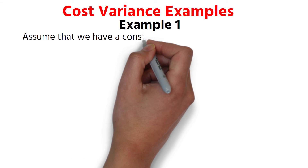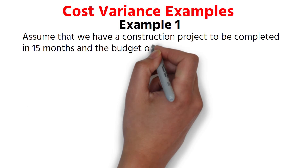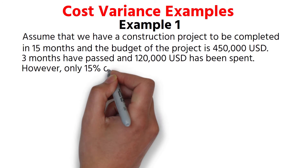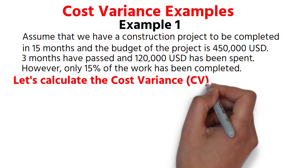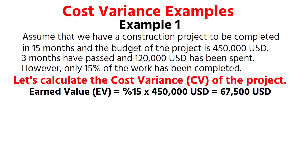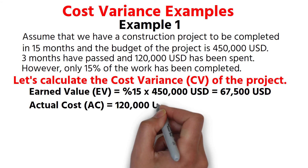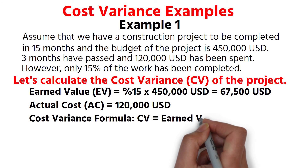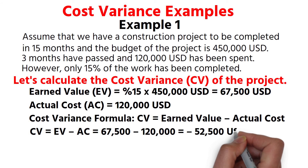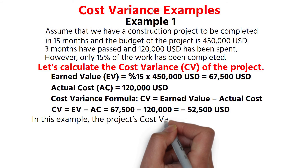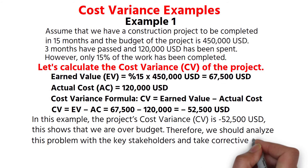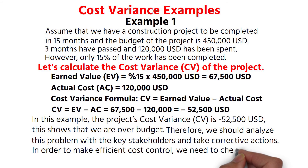Cost Variance Examples. Example 1. Assume that we have a construction project to be completed in 15 months and the budget of the project is $450,000 US dollars. Three months have passed and $120,000 US dollars has been spent. However, only 15% of the work has been completed. Earned Value = 15% × $450,000 = $67,500. Actual cost = $120,000. CV = EV − AC = $67,500 − $120,000 = −$52,500 US dollars. The project's cost variance is negative $52,500, which shows that we are over budget. Therefore, we should analyze this problem with the key stakeholders and take corrective actions.